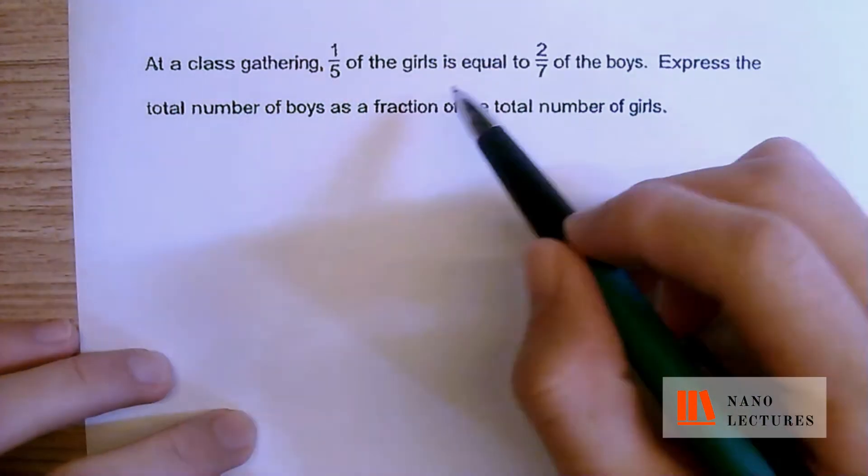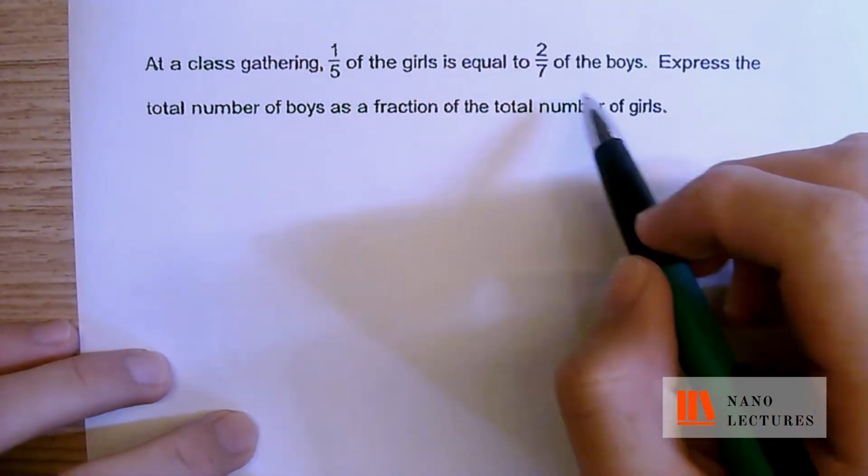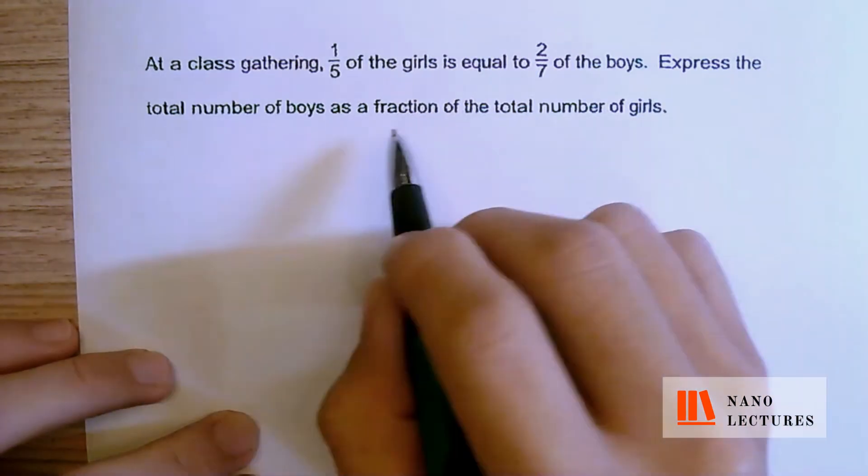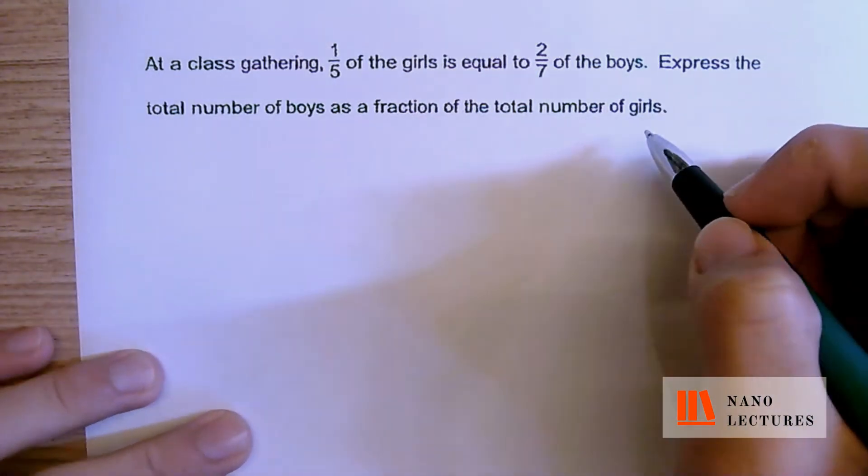At a class gathering, one-fifth of the girls is equal to two over seven of the boys. Express the total number of boys as a fraction of the total number of girls.